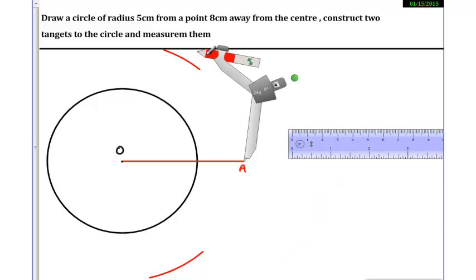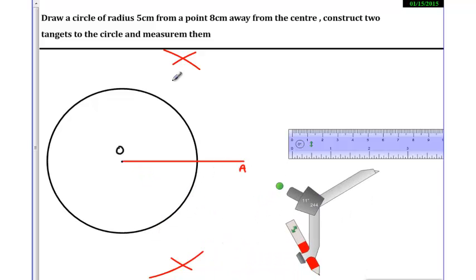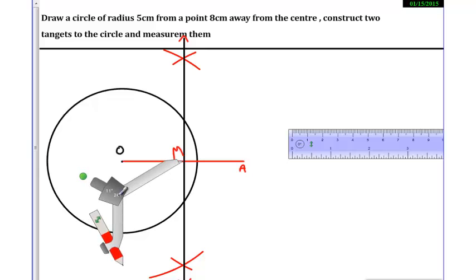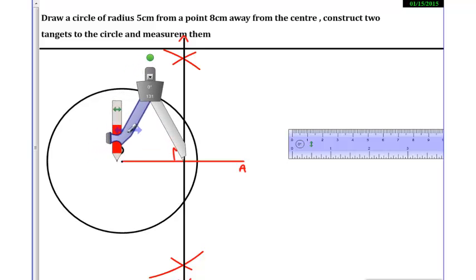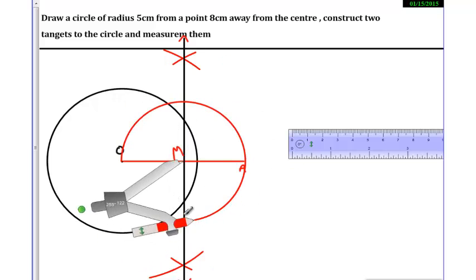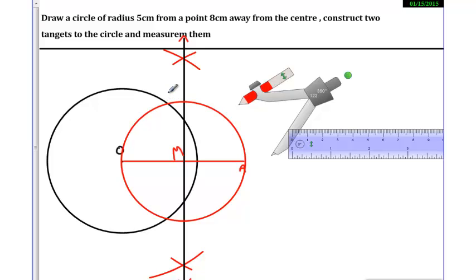Now I will draw the line and let me name this as M here. Now I will take my compass, take the center M, and take radius MO. I will draw a circle, and this circle touches the black circle at 2 points and their points are X and Y.